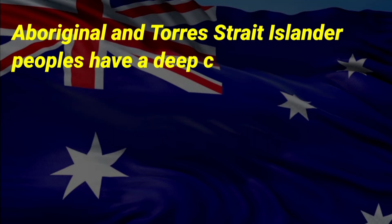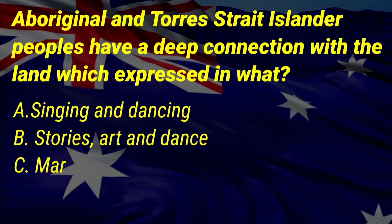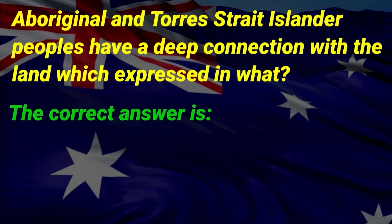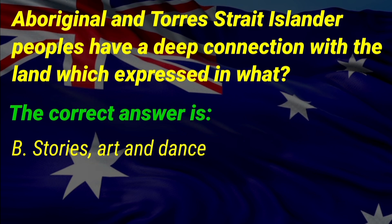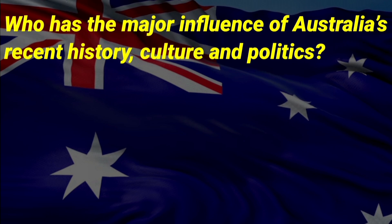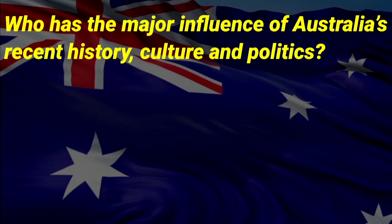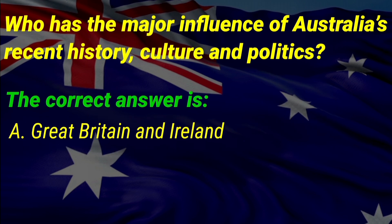Aboriginal and Torres Strait Islander peoples have a deep connection with the land, which is expressed in what? A: singing and dancing, B: stories, art and dance, C: martial arts and dance. The correct answer is B, stories, art and dance. Who had the major influence on Australia's recent history, culture and politics? The correct answer is A, Great Britain and Ireland.